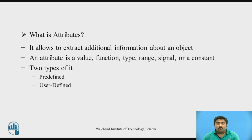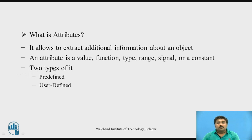What is the last bound of the signal, what is the first bound, the high bound, the left bound, or the right bound — these are all the additional information or attributes of the signal. An attribute is a value, a function, a type, a range, a signal, or a constant. And there are two types of attributes: predefined attributes and user-defined attributes.